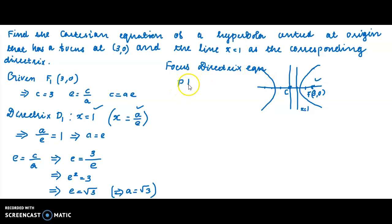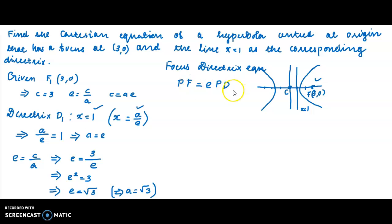Let P be any point on the conic. Then PF = e × PD, where F is the focus and D is the foot of the perpendicular to the directrix. Here F is the focus f1 = (3, 0), and the corresponding directrix d1 is x = 1.